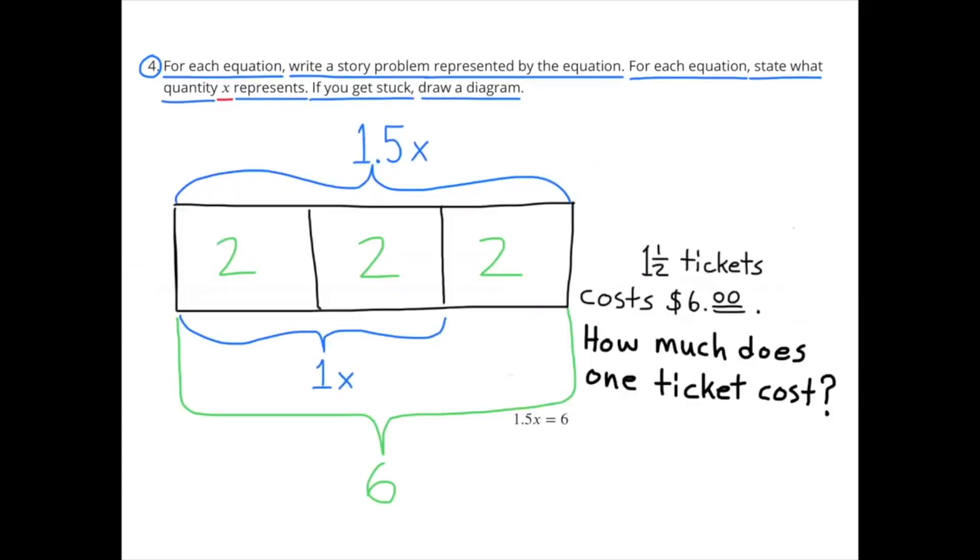1 and 5 tenths X equals 6. 1 and 1 half tickets cost 6 dollars. How much does 1 ticket cost? In my diagram, I have 3 boxes. Each box is worth 2. I put 2 inside each box because 2 times 3 equals 6.